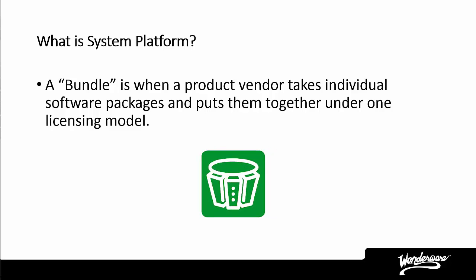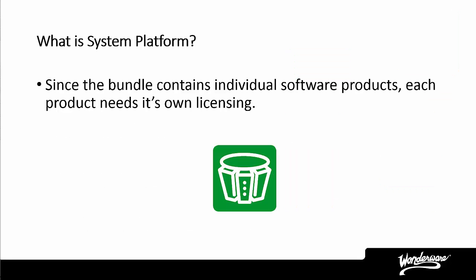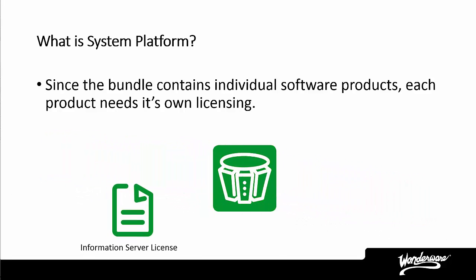Let's look at the software products that are part of the Wonderware System Platform. When you purchase a Wonderware System Platform license, these are the different software packages that are part of the bundle. There are other pieces of software that can be part of the overall application you create, and we will talk about these software packages and their licensing as part of the overall application as well. When you purchase a bundle like Wonderware System Platform or Microsoft Office, the individual software products usually have their own licensing, and all of these licenses come as part of the bundle.